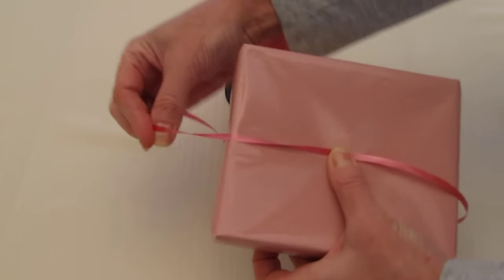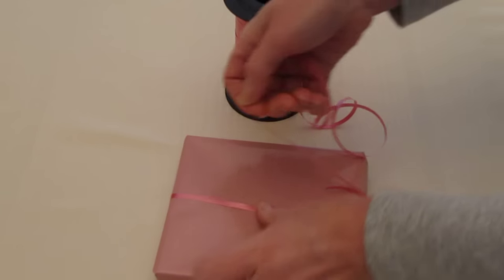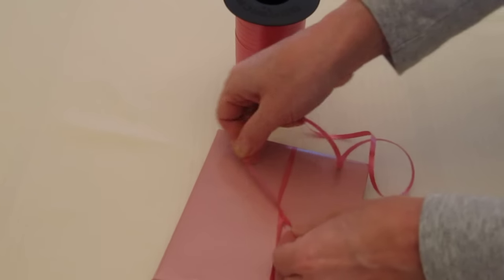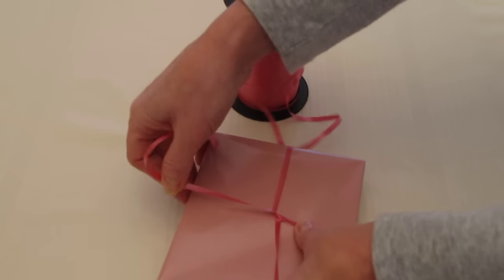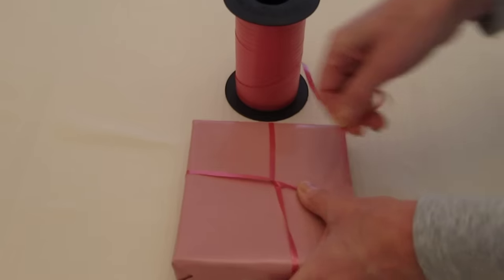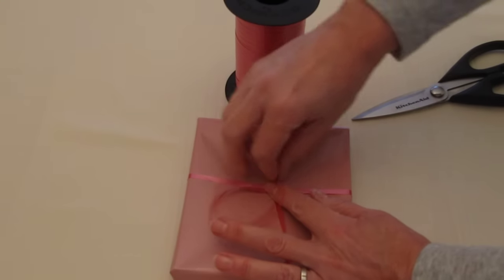We'll bring the ribbon around the gift, and when we get to the top, we're going to turn the gift and take the ribbon around it again. We'll bring it up to the top. You can use your finger to hold it. Cut the ribbon.